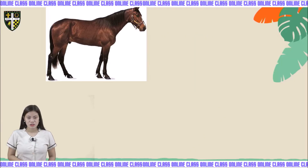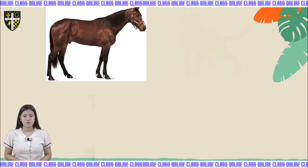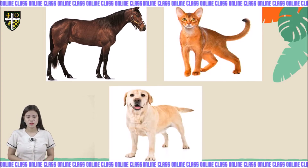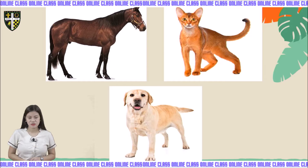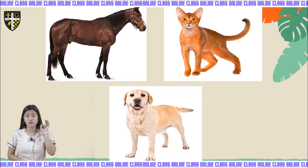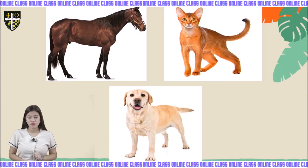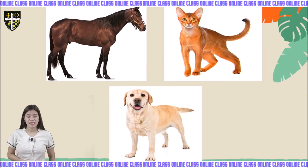Look — what can you see on the floor? Very good, we have horse, cat, and dog. What are they? Very good, they are animals. So can you tell me what are the similarities of these animals? They have legs and tails. Exactly.